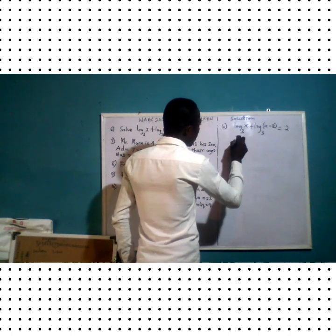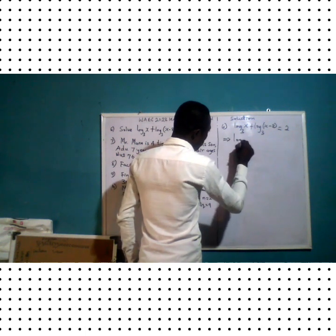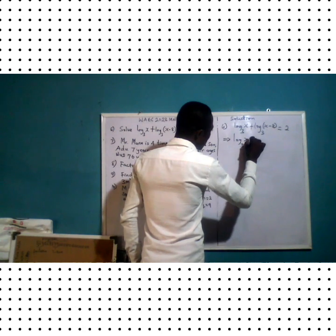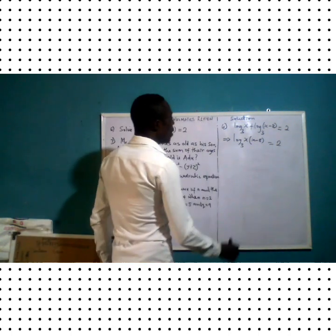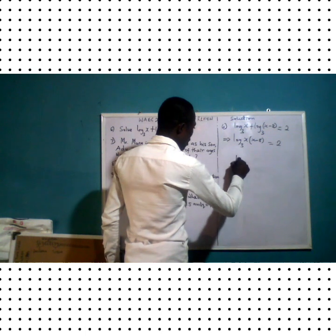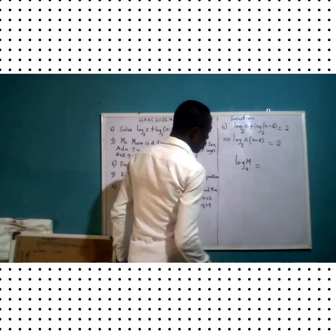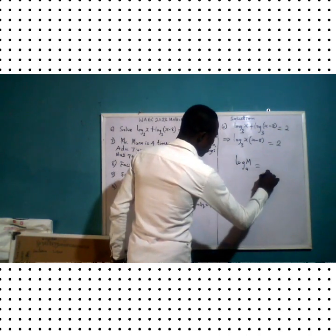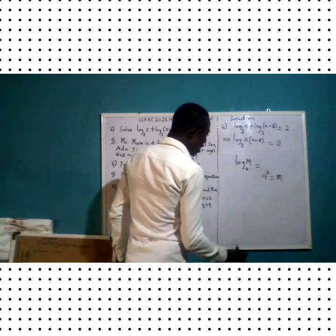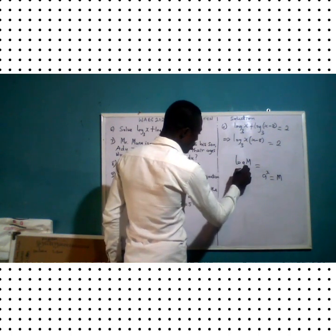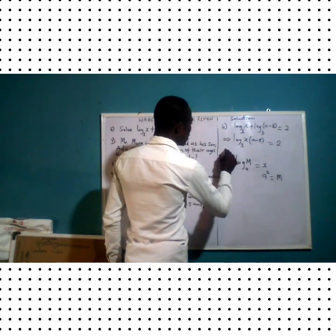By the law of logarithms, we can express this as log base three of x(x minus x) equals two. Applying the definition of logarithm: log base a of m equals x means a raised to the power x gives m. So if log base a of m equals x, then a raised to the power x equals m.